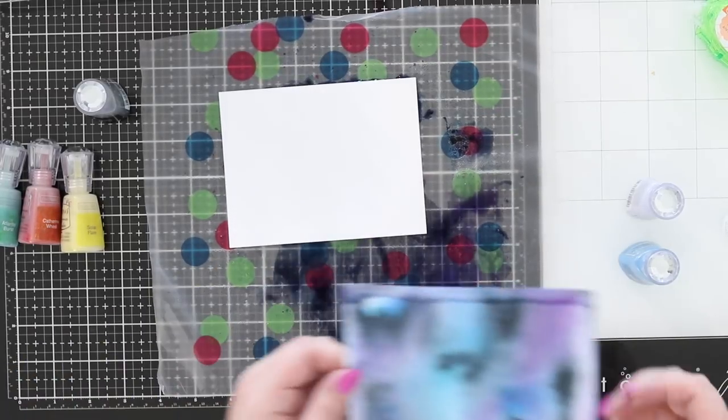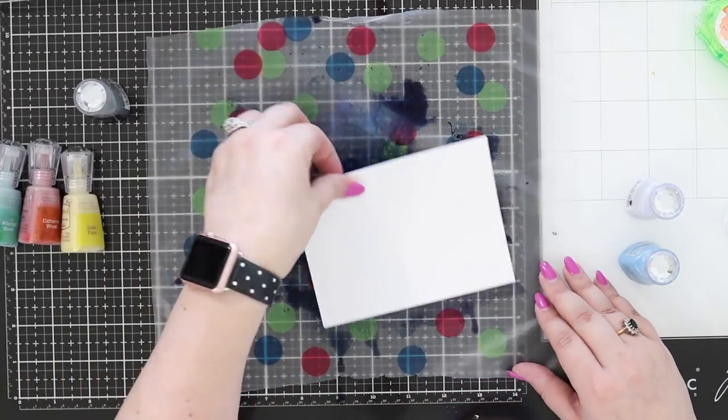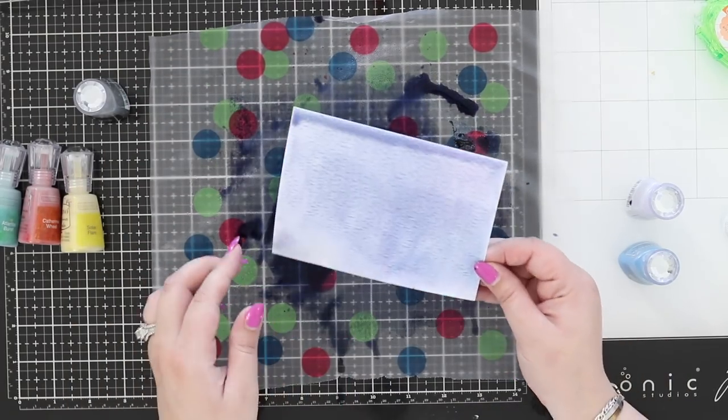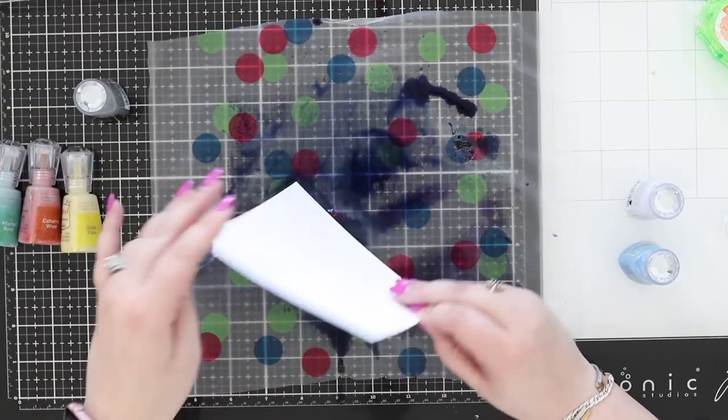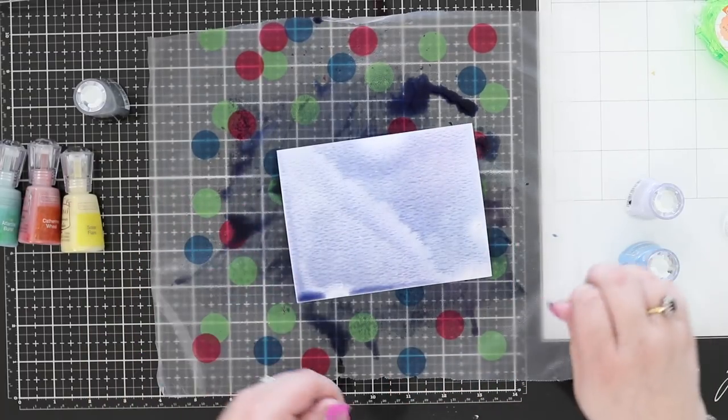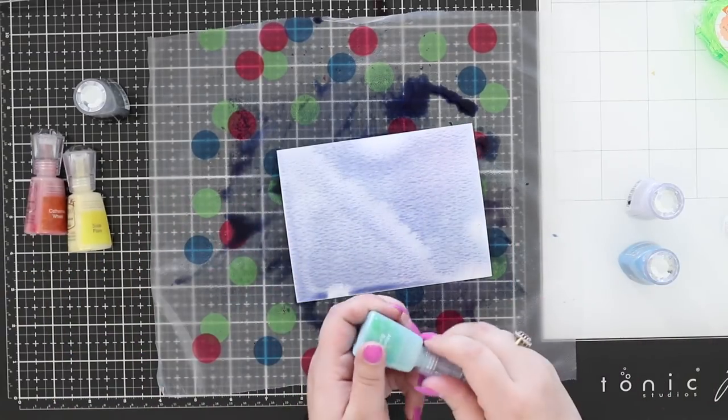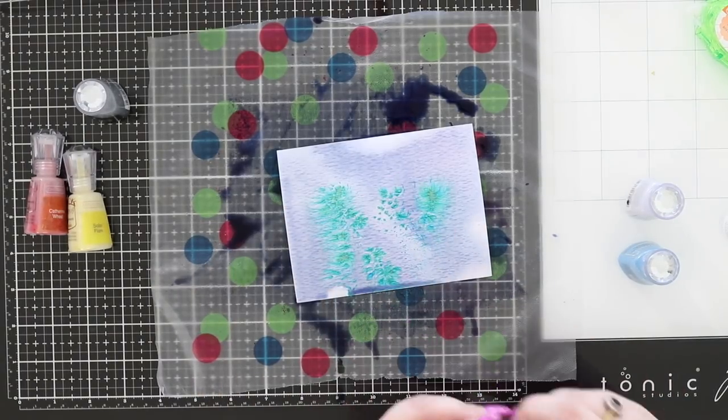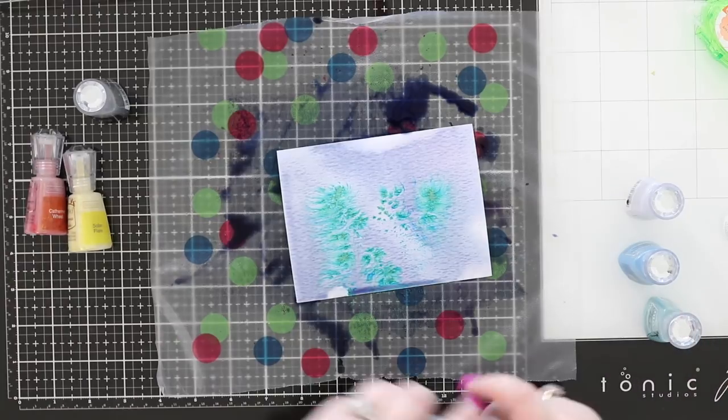You can also take a piece of watercolor cardstock onto your leftovers and pick up any of that color. These are water activators, so if there's no water there, nothing is going to happen. I can keep going in. I've got a really nice background color there that I could then add other colors to. I could add some of the Atlantis Burst, which has greens and blues.